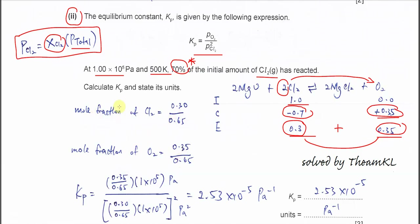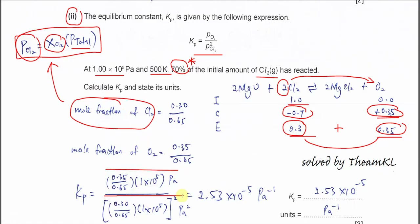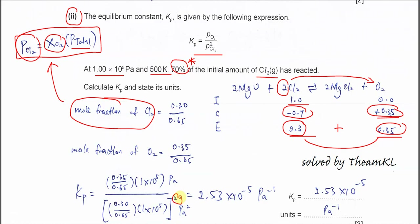Once you have the mole fractions, substitute into the partial pressure formula: partial pressure of Cl₂ = (0.3/0.65) × total pressure; partial pressure of O₂ = (0.35/0.65) × total pressure. Kp = partial pressure of O₂ ÷ (partial pressure of Cl₂)². The unit works out as Pascal per Pascal squared, giving per Pascal (Pa⁻¹). After calculation, you should get Kp = 2.53 × 10⁻⁵ Pa⁻¹.